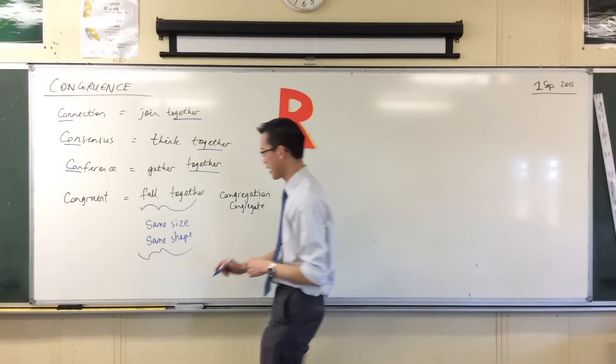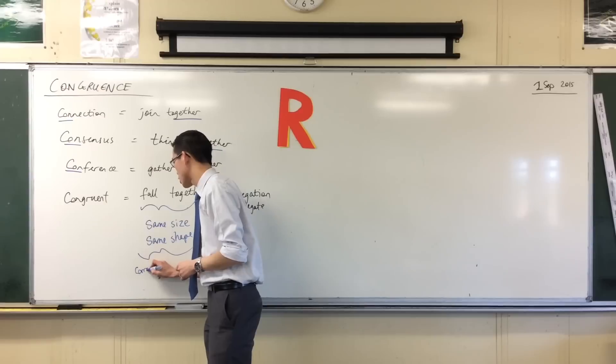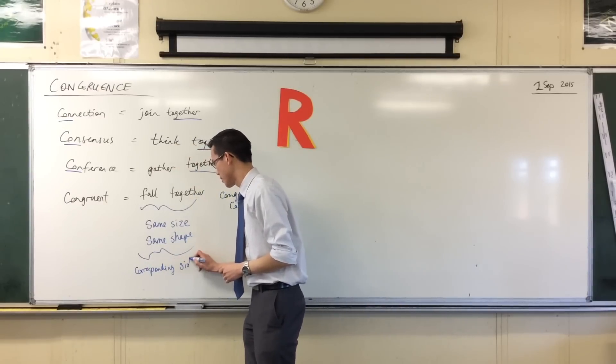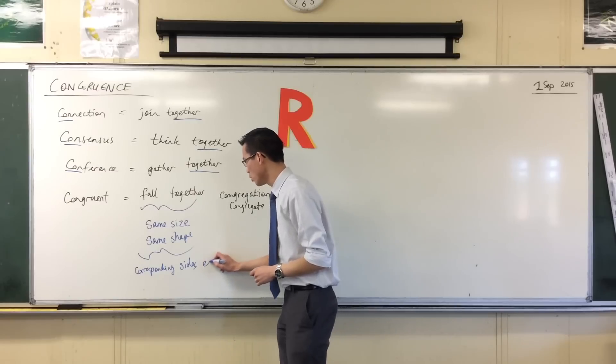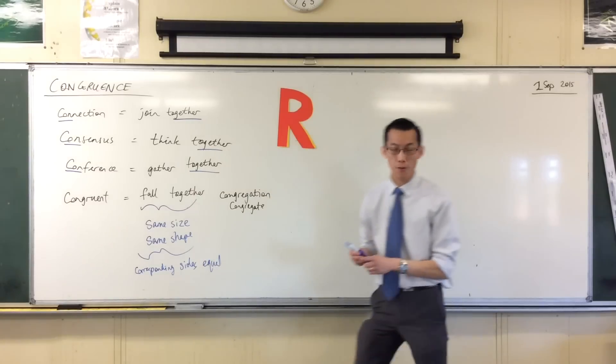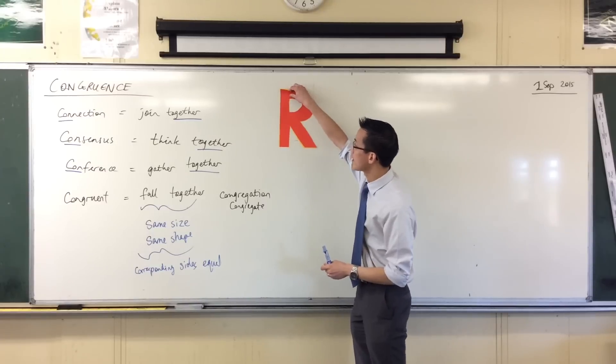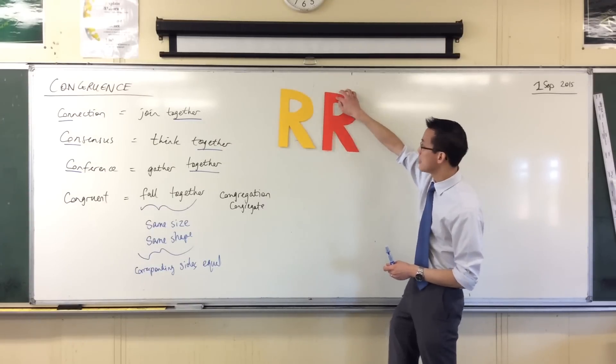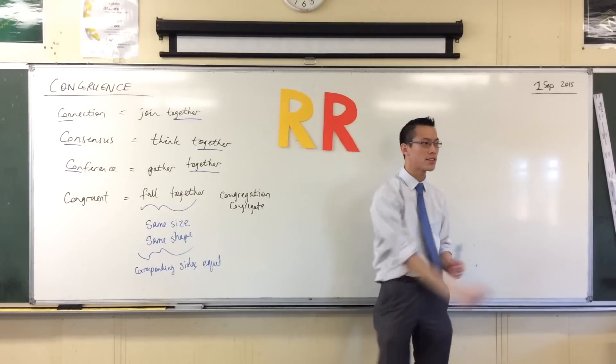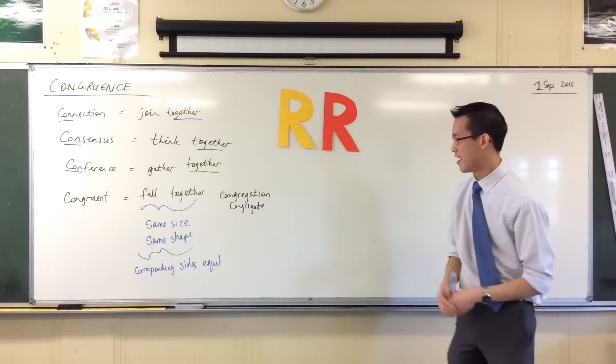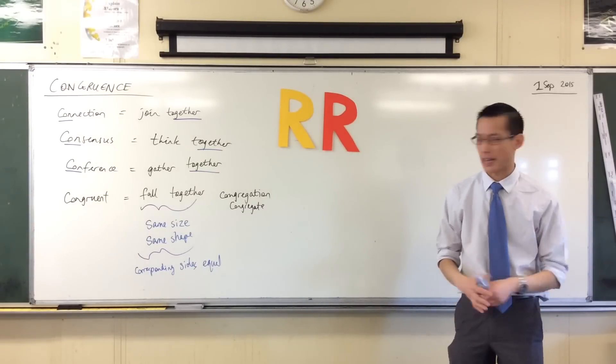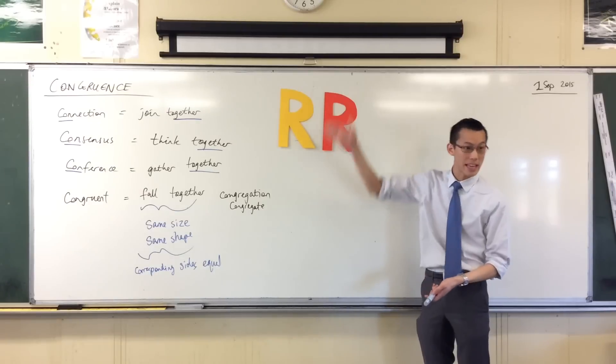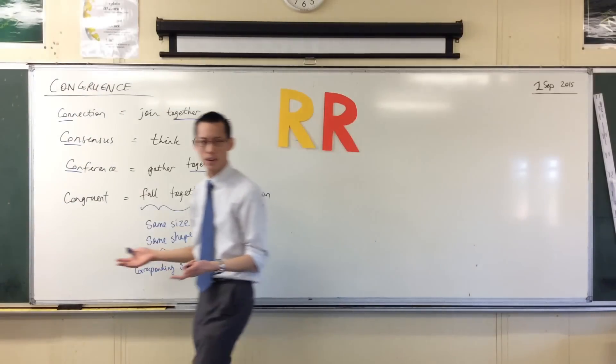I want the corresponding sides to be equal or identical. So for instance I've got this vertical side over here, this one over here, and I want it to be exactly the same length as this one. If it's off even by a millimeter they won't be the same shape, the same size.